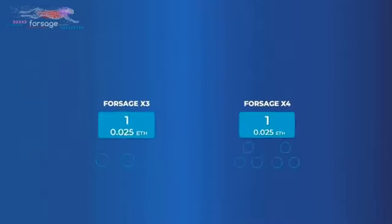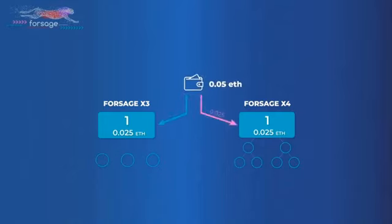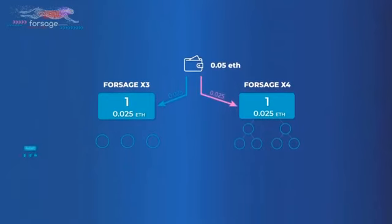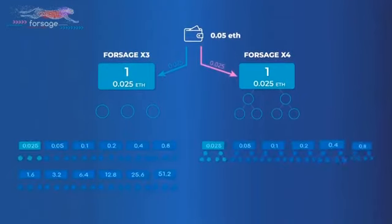Registration: how it works. First slot in each program costs 0.025 Ethereum. You can buy separately—they are bringing together upon registration. So to register in Forsage, you need 0.05 Ethereum.